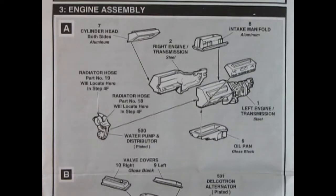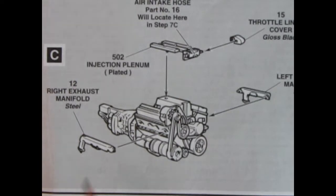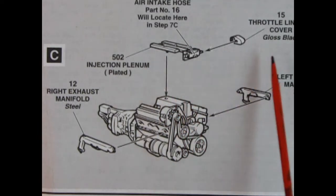So now that we know the paint for the model kit we can get right away into building this engine. Here we have the intake manifold, the left and right hand side cylinder heads, the engine and transmission, the oil pan and the front timing chain cover. It marks out where the radiator hoses will go. Step B shows our valve covers going on the engine as well as the starter, air conditioner compressor pump, alternator, and all these belts and pulleys. Step C shows our air intake hose being glued to the top of the engine with the injection plenum, throttle linkage cover, and left and right hand side manifolds.